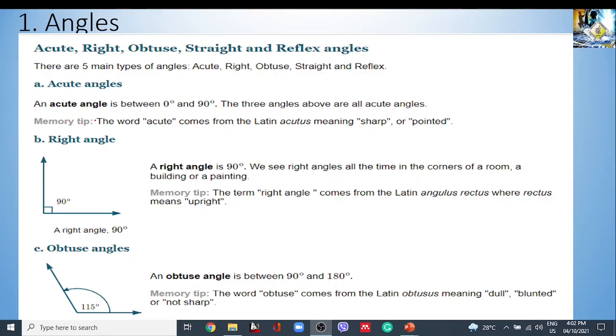So for the mnemonics for this, or our memory tip, the word acute from Latin means sharp or pointed. So this one is an acute angle, right angle, and obtuse. So they're all acute angles. So sharp. So sharp is the corner.